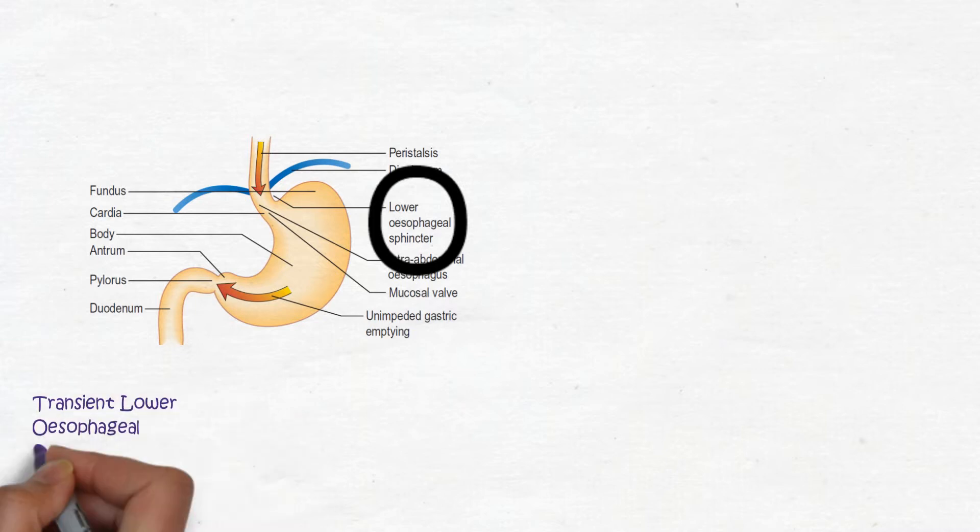Transient lower esophageal sphincter relaxations are part of normal physiology, but occur more frequently in gastroesophageal reflux disease patients. Small amounts of gastroesophageal reflux are normal.